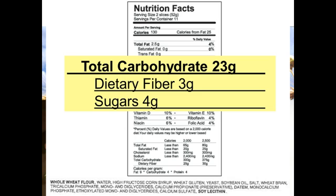There are really three things I think you should notice from this. First, we have something called total carbohydrates, which is 23 grams. The total is given at the top, and the constituent parts that make up that total are listed underneath. So there's 23 grams of carbohydrate, and of that 23 grams, 3 grams are what we call dietary fiber. Whatever dietary fiber is, it is a carbohydrate. And then the second thing listed is sugars, at 4 grams — so sugars are a carbohydrate.